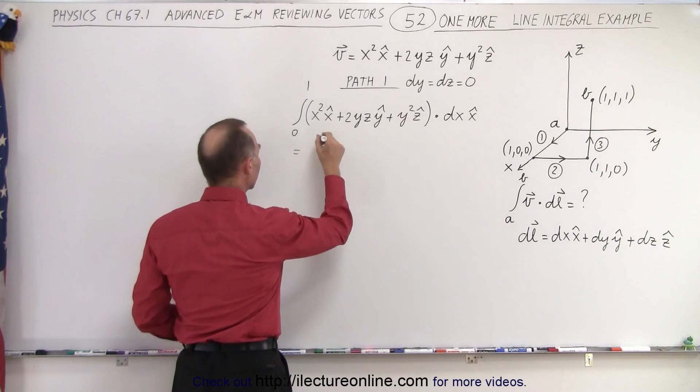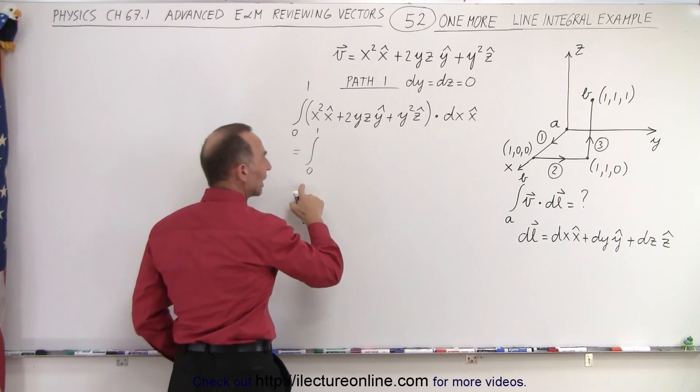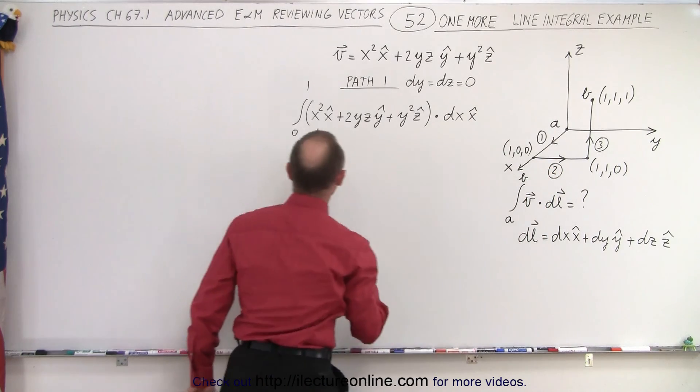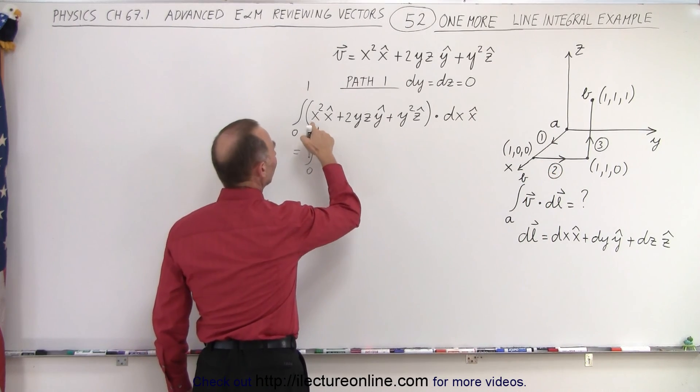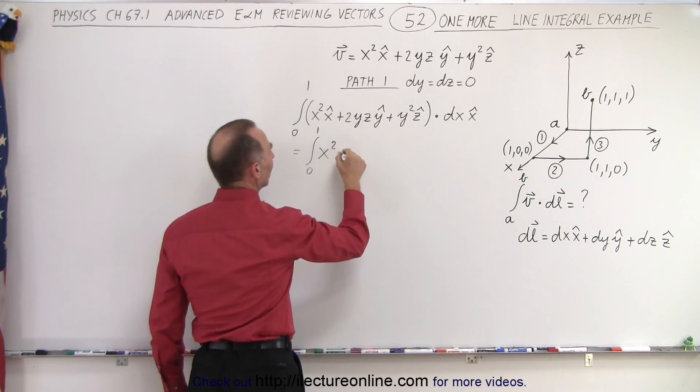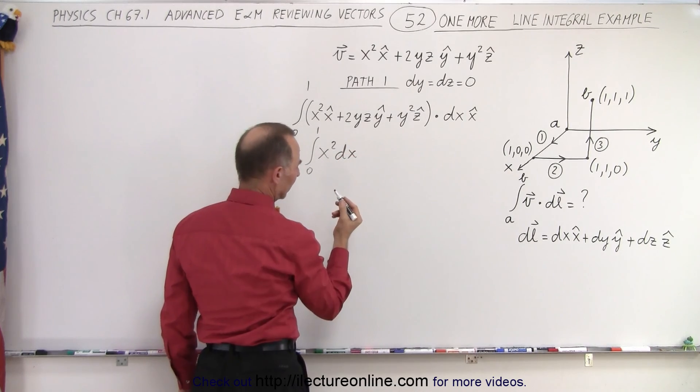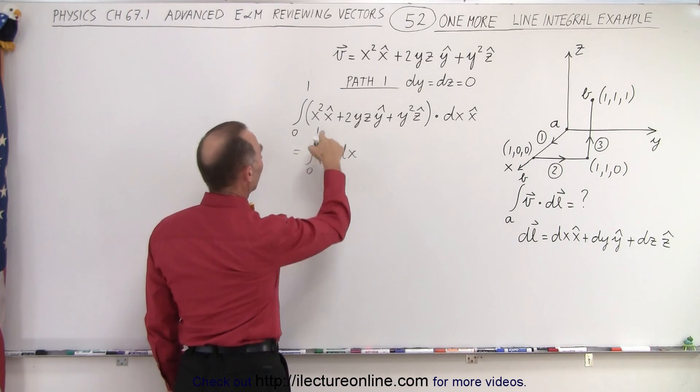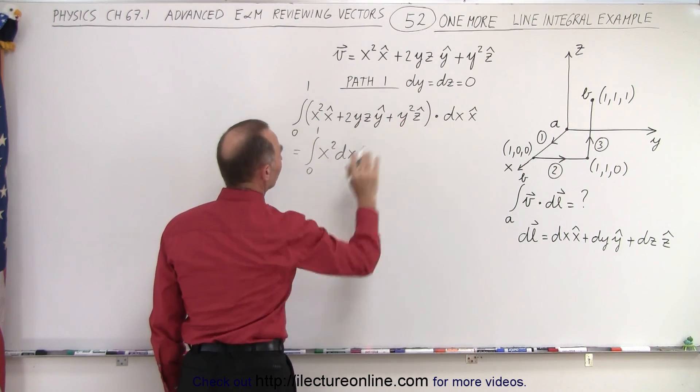So this becomes equal to the integral from 0 to 1, because in the x-direction we travel from the origin x equals 0 to x equals 1. And we have x squared times dx. So we have x squared times dx, the others drop out.